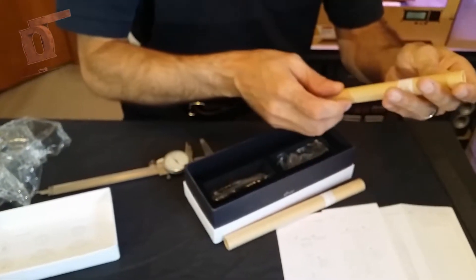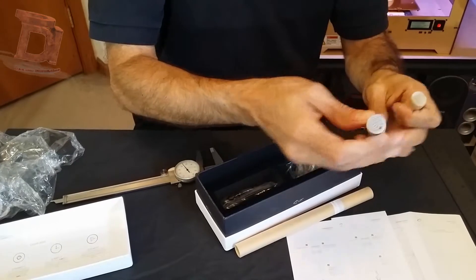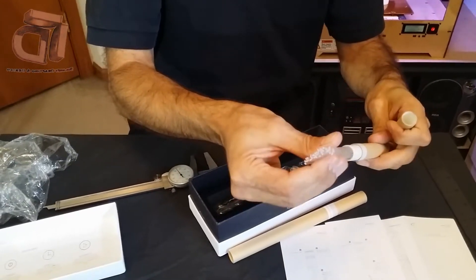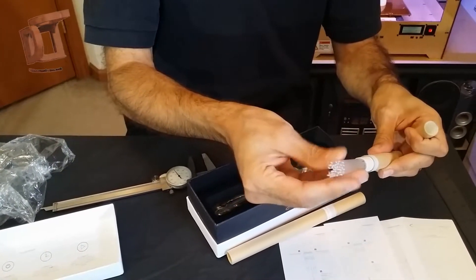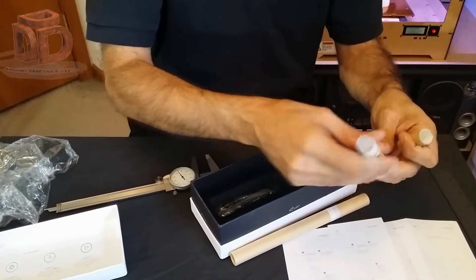And then here it says ABS clear filament. So there's 40 rods of ABS and clear.